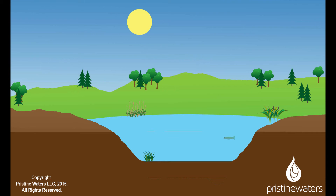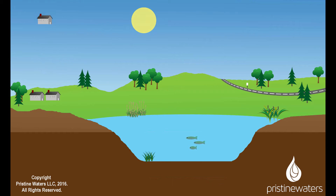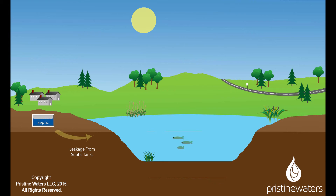Eutrophication is the process by which a pond or lake becomes a swamp and eventually a meadow. As humans settle and develop land around water bodies, they make an impact on these water bodies through reduced vegetative cover, nutrient load from failing septic systems, household chemicals, fertilizers, and ineffective stormwater management systems.